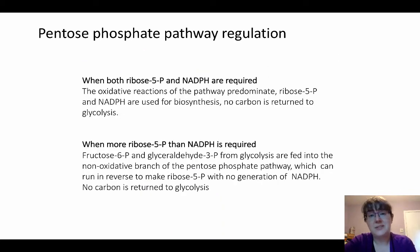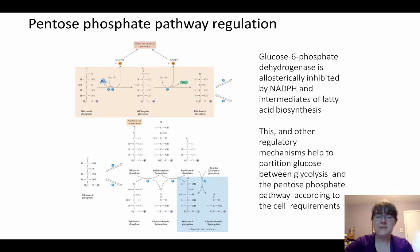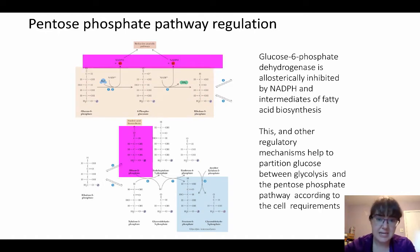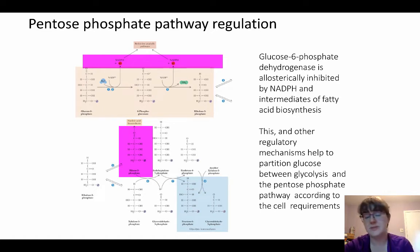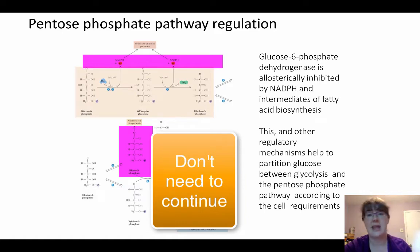The question is: what does the cell need, and how is it going to use the pentose phosphate pathway to get it? If it needs both ribose-5-phosphate and NADPH, it's going to go through those oxidative steps at the beginning and then just do that one step from ribulose-5-phosphate to ribose-5-phosphate. That ribose-5-phosphate can then go on to nucleic acid biosynthesis. So it starts with glucose-6-phosphate, produces two sets of NADPH, ends with ribulose-5-phosphate and carbon dioxide, and is on its way.